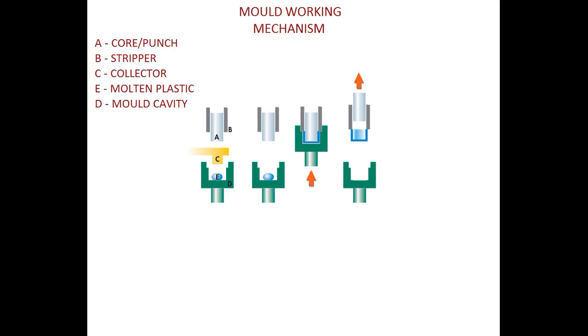Collector leaves the molten plastic into the mold cavity, then both mold cavity and the punch come together to form the cap. Afterwards, mold cavity and punch move away. As you can see in the last image, the punch of the mold is moving upward, leaving the cap behind.